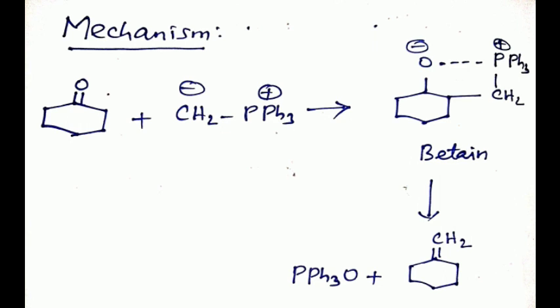The aldehyde or ketone may be aliphatic or aromatic, or may contain double bonds, triple bonds, or various functional groups such as alcohol, alkoxy, NO₂, halo, or ester groups. The mechanism involves the aldehyde or ketone combining with the phosphorus ylide to form a betaine or oxaphosphetane intermediate. This is a four-membered cyclic transition state that cannot be detected by any spectral method.